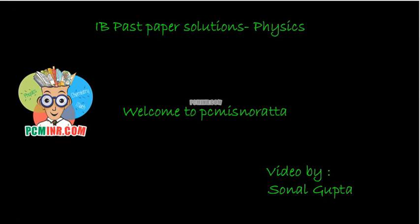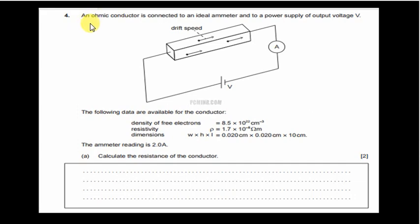Hello and welcome to PCM is no Ratta. You're watching this video on past paper solutions for IB physics by Sonal Gupta. I'll quickly read the question. An ohmic conductor is connected to an ideal ammeter and to a power supply of output voltage V.